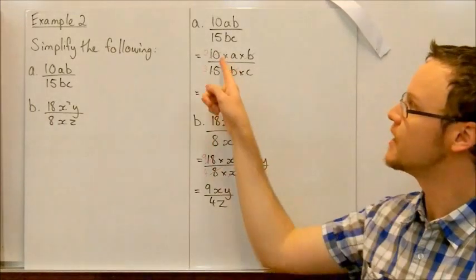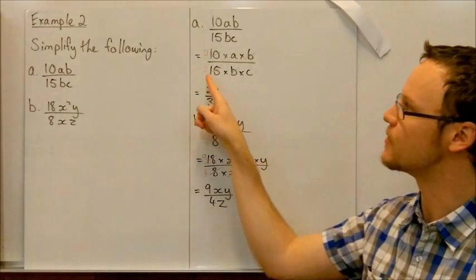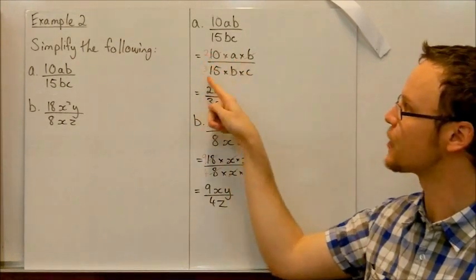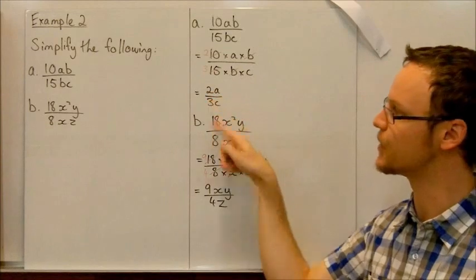We can divide them both by 5. 10 divided by 5 is 2, 15 divided by 5 is 3. So we're left with 2 times a and 3 times c. 2a on 3c.